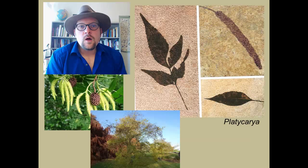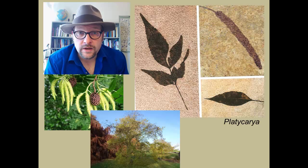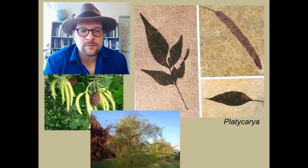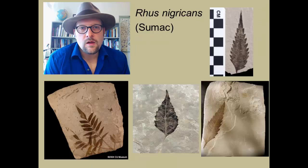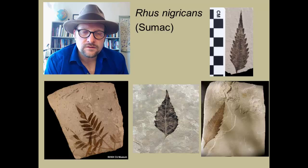One of the most common fossil leaves in the Green River Formation is the genus Platycaria. Today it lives in Asia, particularly in China, Korea, and Japan. It is a member of the walnut family, with long female catkins — bundles of flowers — and spiky cone-like seed structures often mistaken for conifer pine cones. The next common fossil leaf is Rhus niciari, which is sumac. They have toothed, slender leaves, and a number of these have been found in the Green River Formation as well.